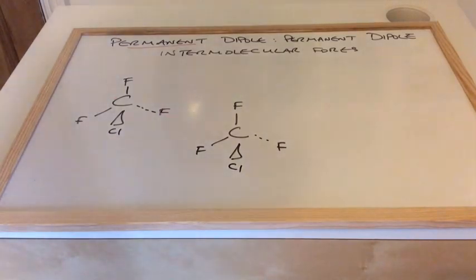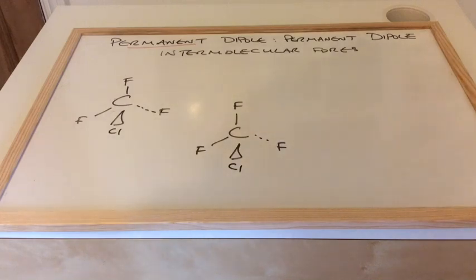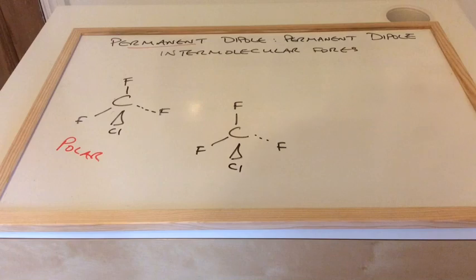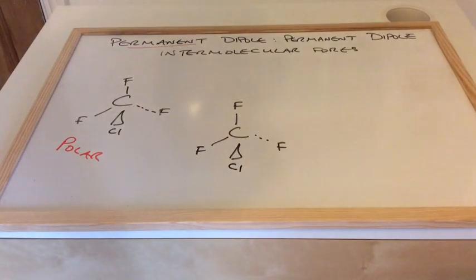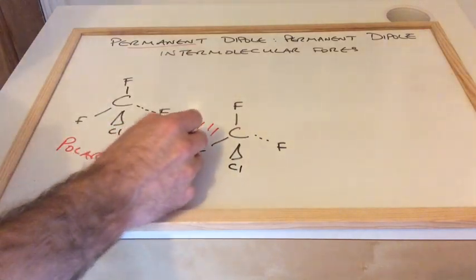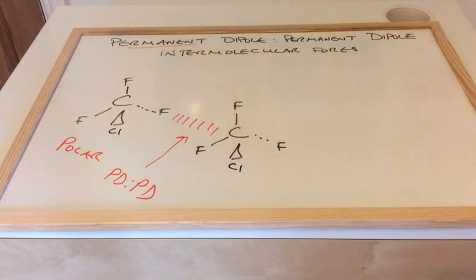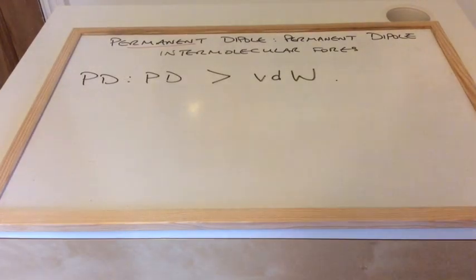I've swapped one of the F atoms for Cl in each molecule, turning it into a non-symmetrical molecule. The dipoles can't cancel anymore, so these are polar molecules now — they have a permanent dipole in them. Remember before with CF₄ those dipoles could cancel out, but they can't now. Therefore the intermolecular force must be called a permanent dipole, permanent dipole intermolecular force. And to finish: permanent dipole, permanent dipole intermolecular forces are stronger than van der Waals forces.